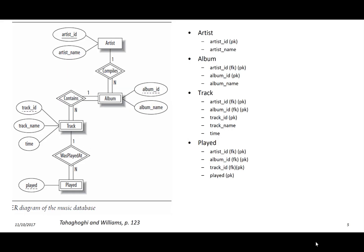Now we're done with the basic process. We created four tables. We designated the primary key for the artist table as the single artist ID. For the album table, we have a composite primary key of artist ID and album ID, where artist ID is a foreign key. For the track table, we have a composite primary key of artist ID, album ID, and track ID. For the played table, we have a composite primary key consisting of all four fields. The artist primary key is a component of the primary key in the album table and also a foreign key.